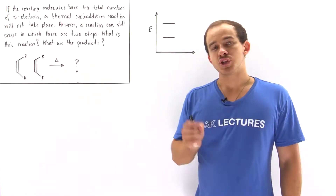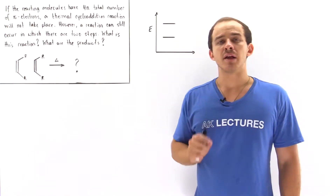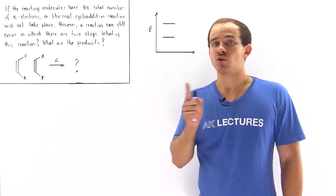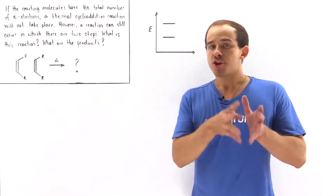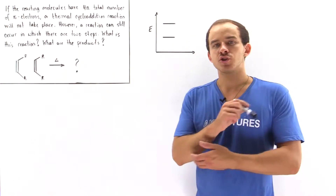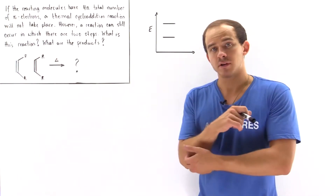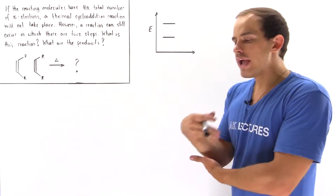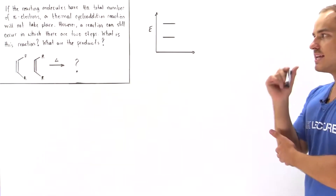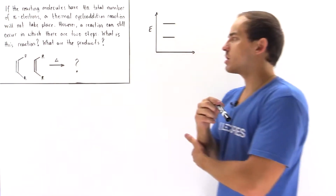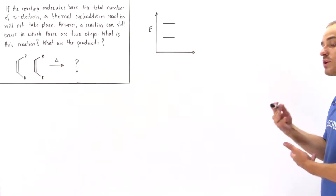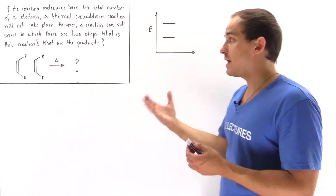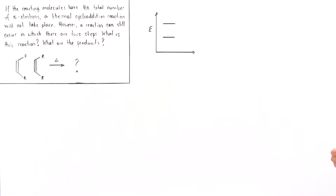If the reacting molecules have a total number of pi electrons equal to 4n, where n is any positive integer that can also be zero, no thermal cycloaddition reaction will actually take place — a photochemical cycloaddition reaction will take place instead. Even though a thermal cycloaddition reaction will not take place when our two molecules are in the presence of heat, a reaction will take place that is a stepwise reaction, containing two steps.